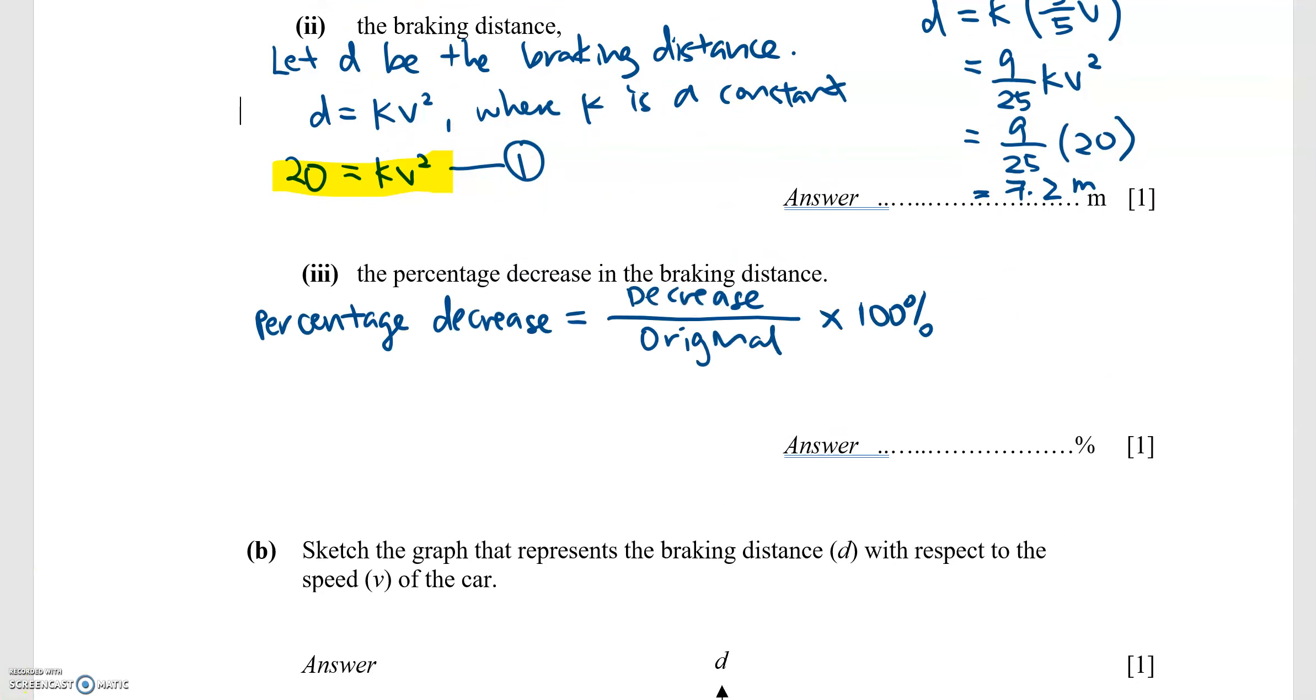The percentage decrease is the decrease over the original times 100%. This will give us 20 minus 7.2 over the original 20 meters times 100%, giving us the answer of 64%.